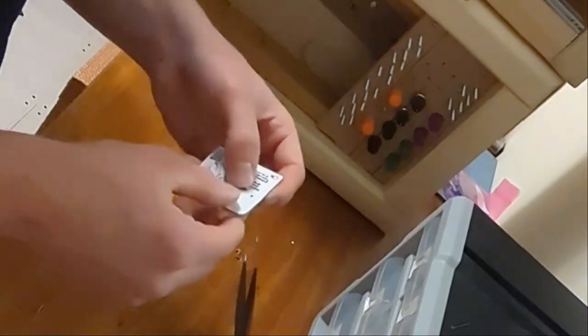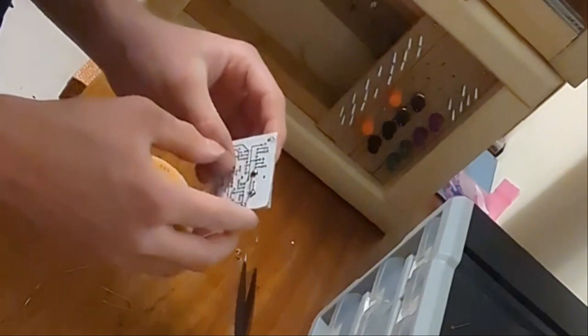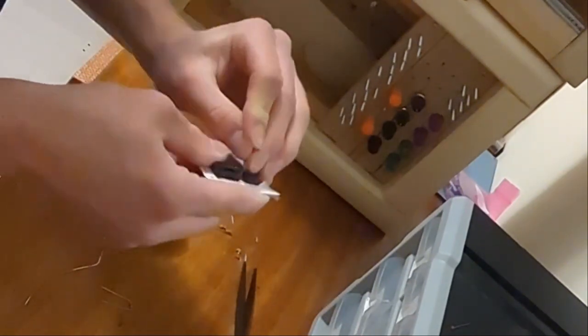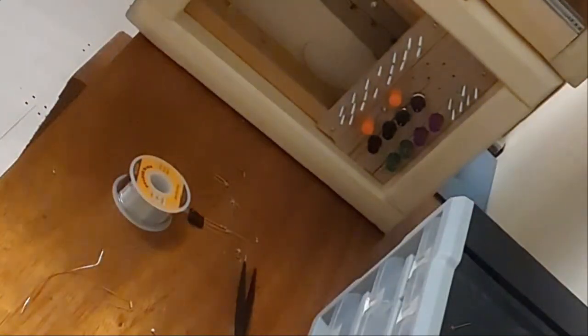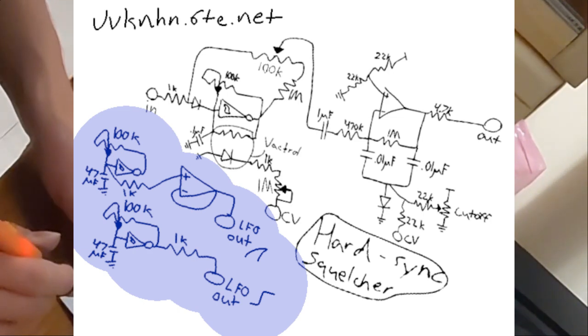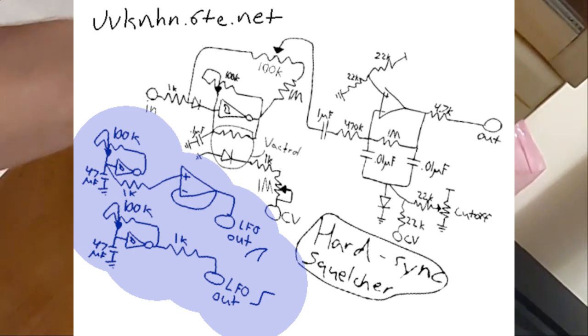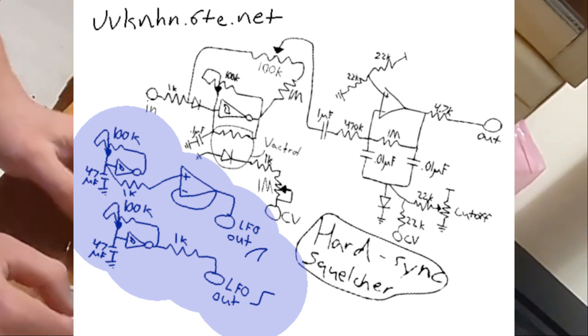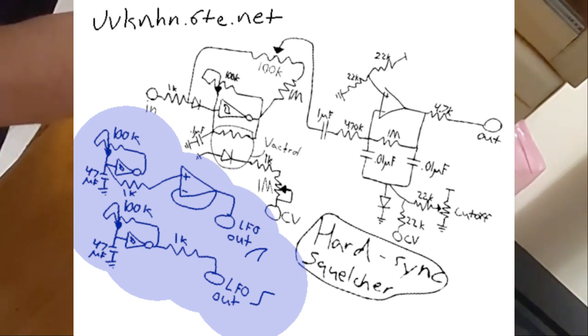And then since that uses the CD40106, I figured I may as well get some use out of the inverters on there. So there are two low-frequency oscillators. One of them is going into the remaining op-amp on the op-amp chip, because the filter only takes one op-amp. So that's just being used as a buffer for the input side of the inverter, so you can get that sort of shark fin waveform out of there for the LFO.